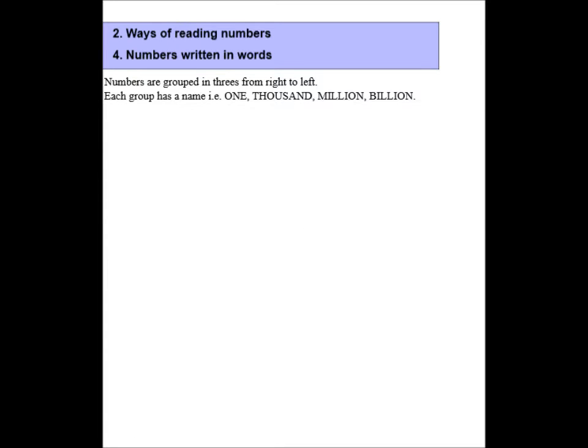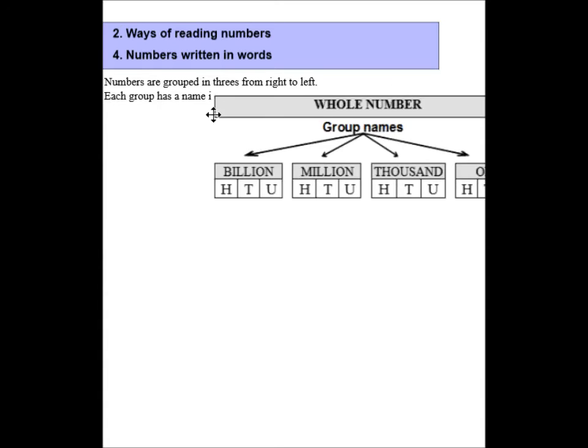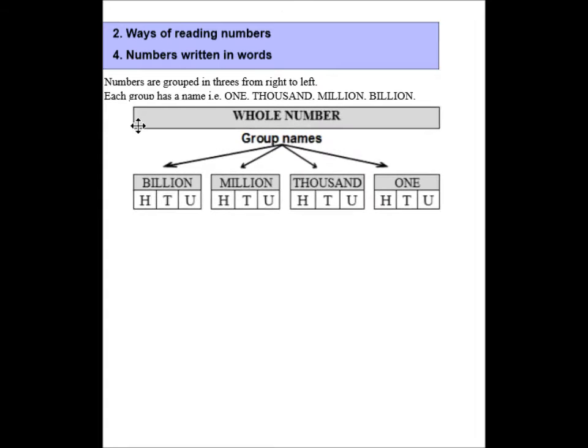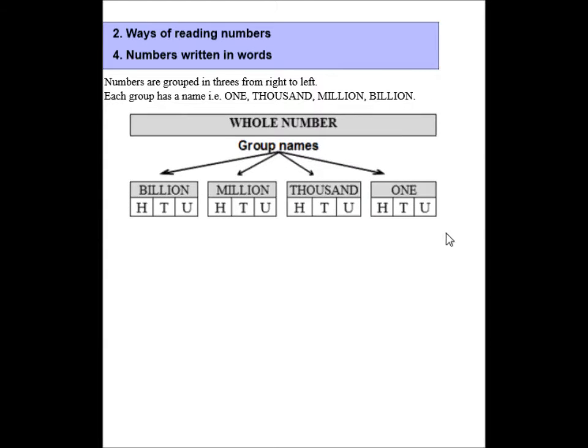Ways of reading numbers and writing numbers in words. If you can read three digits linked together, you can read a number of any magnitude. What we have to remember is that whole numbers are grouped into threes from right to left. Each group has a name: the group of ones, the group of thousands, millions, billions, trillions and so on.